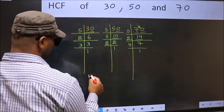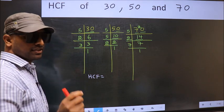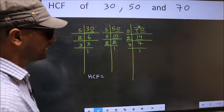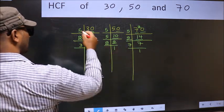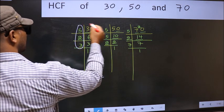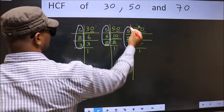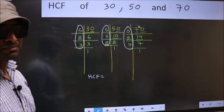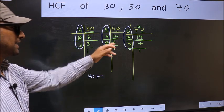Therefore, HCF is the product of numbers which should be present in these three places - here, here, and also here. HCF is the product of numbers present in all three places.